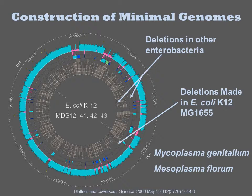The smallest free-living bacterium is Pelagibacter ubique with only 1.3 megabases. Thus, it is possible to have something smaller than 3 MB. However, most bacteria have 3 MB of these housekeeping functions.